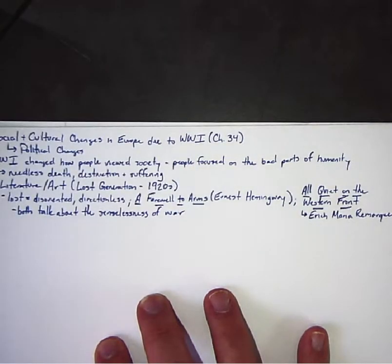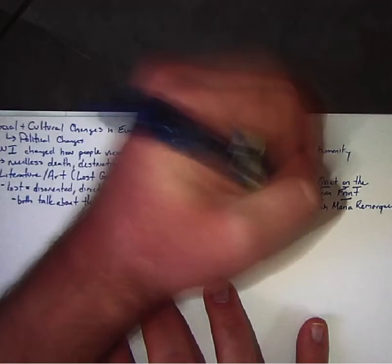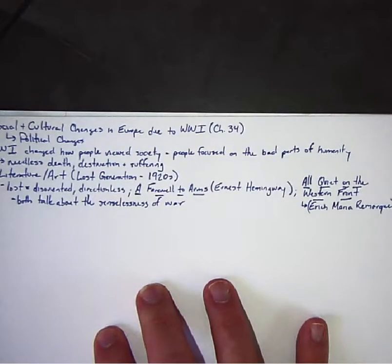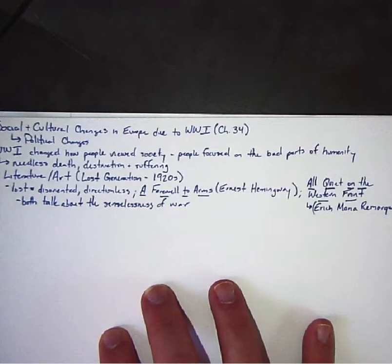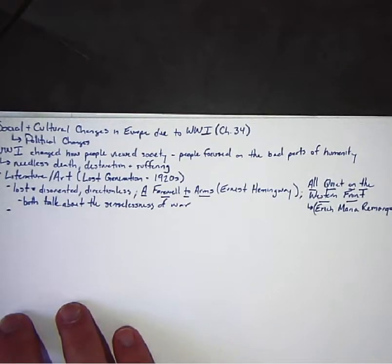Both of these novels talk about the senselessness of war, which is a big change because prior to World War I a lot of people believed war to be a good thing, like how a forest fire makes the forest stronger. But both artists note that war is senseless destruction—it doesn't do anything good.